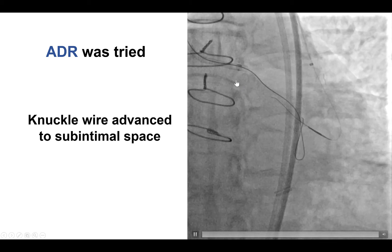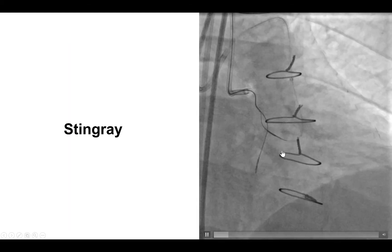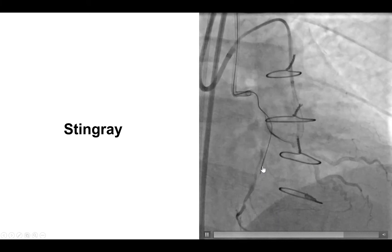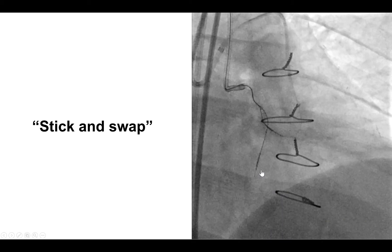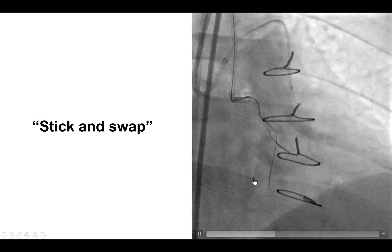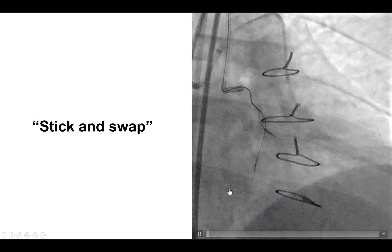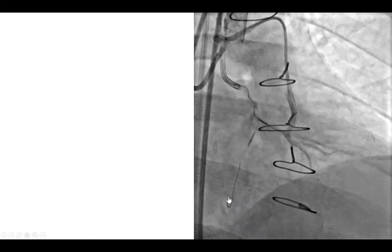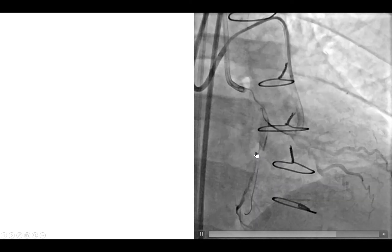What we decided to try next was antegrade dissection re-entry into the circumflex. We really didn't worry as much about the obtuse marginal, which had a nicely patent radial graft, but we wanted to re-canalize the distal circumflex. We tried antegrade dissection re-entry, delivered a Stingray guide wire which seemed close to the distal true lumen, and performed re-entry attempts with stick-and-drive and double-blind stick-and-drive technique. The guide wire was exiting between the two markers of the Stingray balloon, but was not moving far enough to reach the distal true lumen, and injection demonstrated that re-entry had failed, with some distance between the Stingray balloon and the distal true lumen.